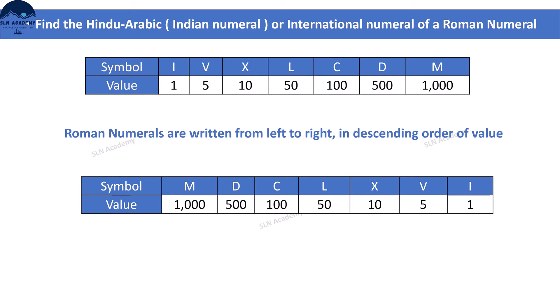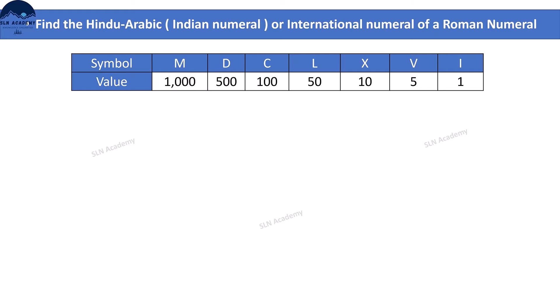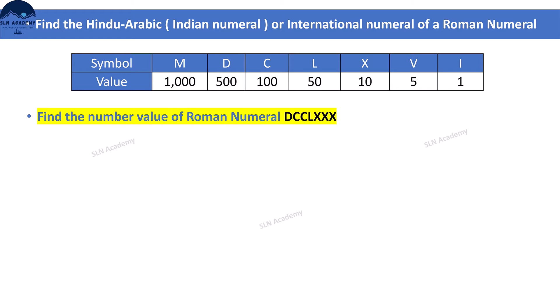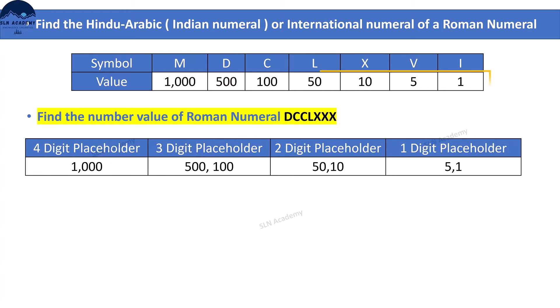Now let us see the conversion of Roman numerals to Hindu-Arabic numerals. Question 1: Find the Indian or international numeral of Roman numeral DCCLXXX. We have to find the number value of this Roman numeral. Regroup the Roman numbers present in this chart into groups such as 4-digit, 3-digit, 2-digit, and 1-digit numbers. 1000 is a 4-digit number; 500 and 100 are 3-digit numbers; 50 and 10 are 2-digit numbers; 5 and 1 are 1-digit numbers. This is just to regroup or simplify the process — you can avoid this step if you want.